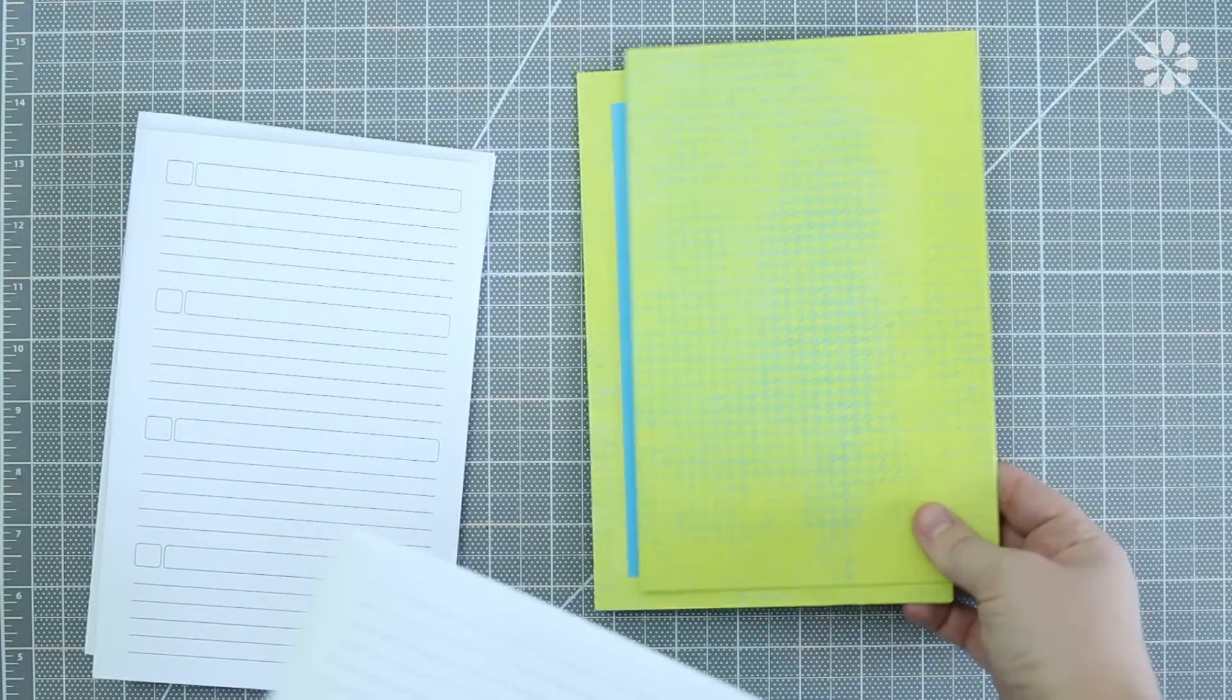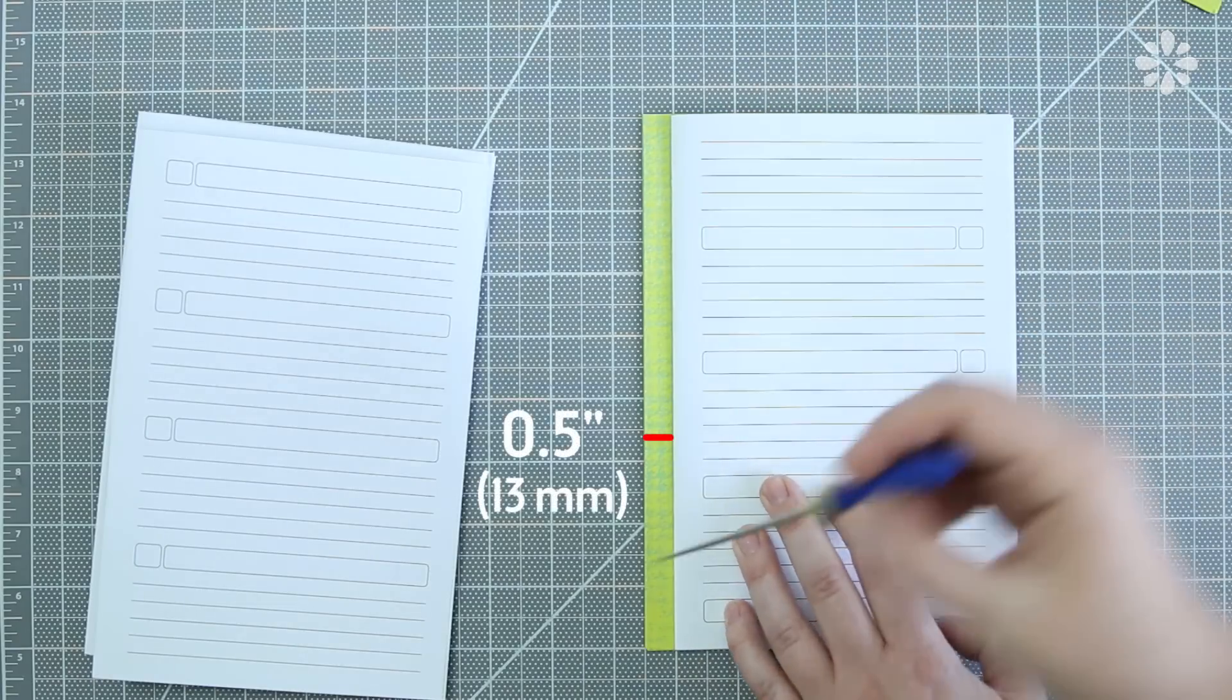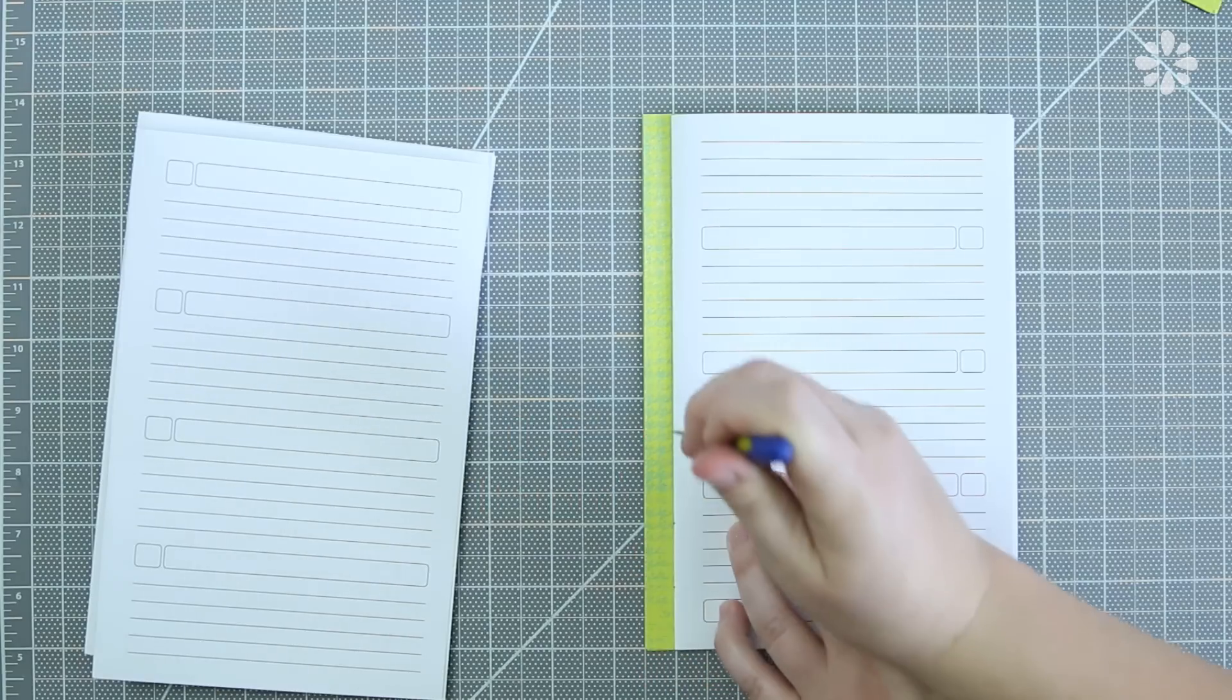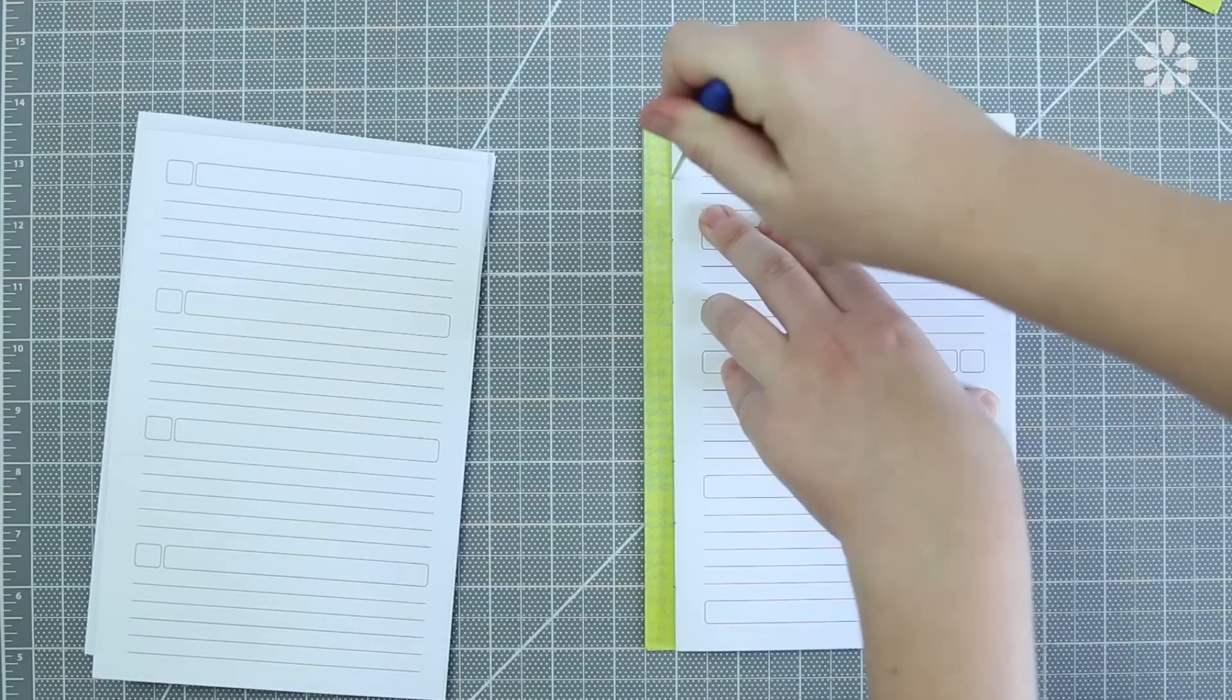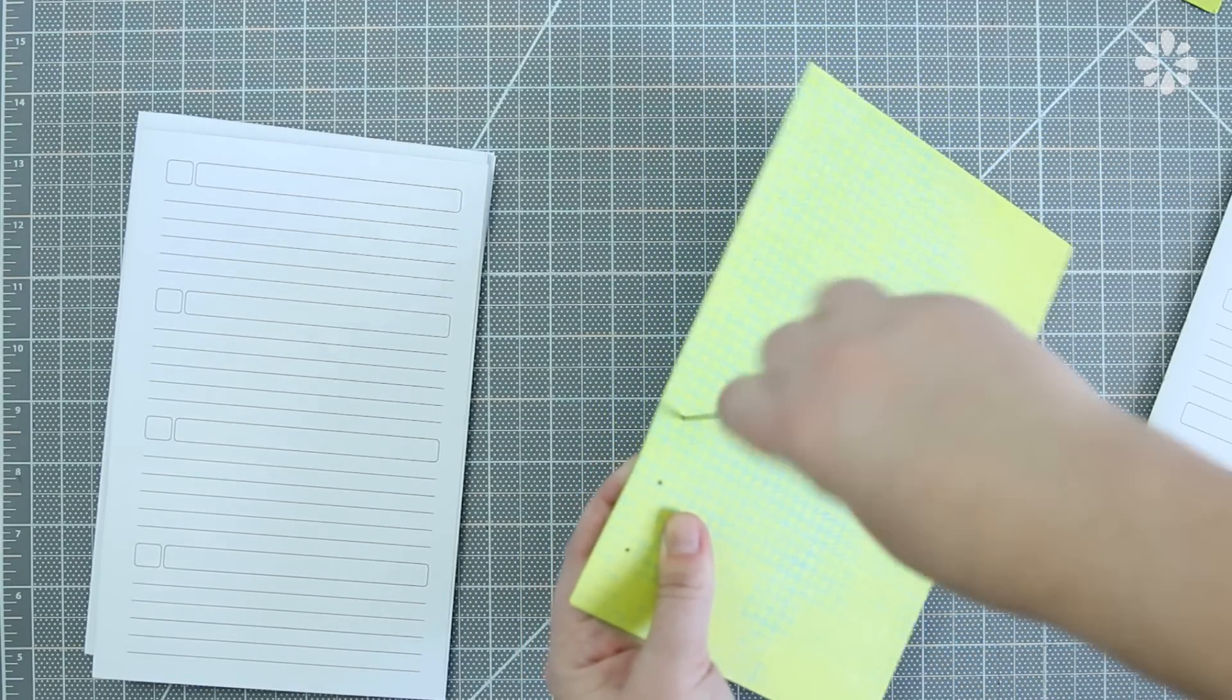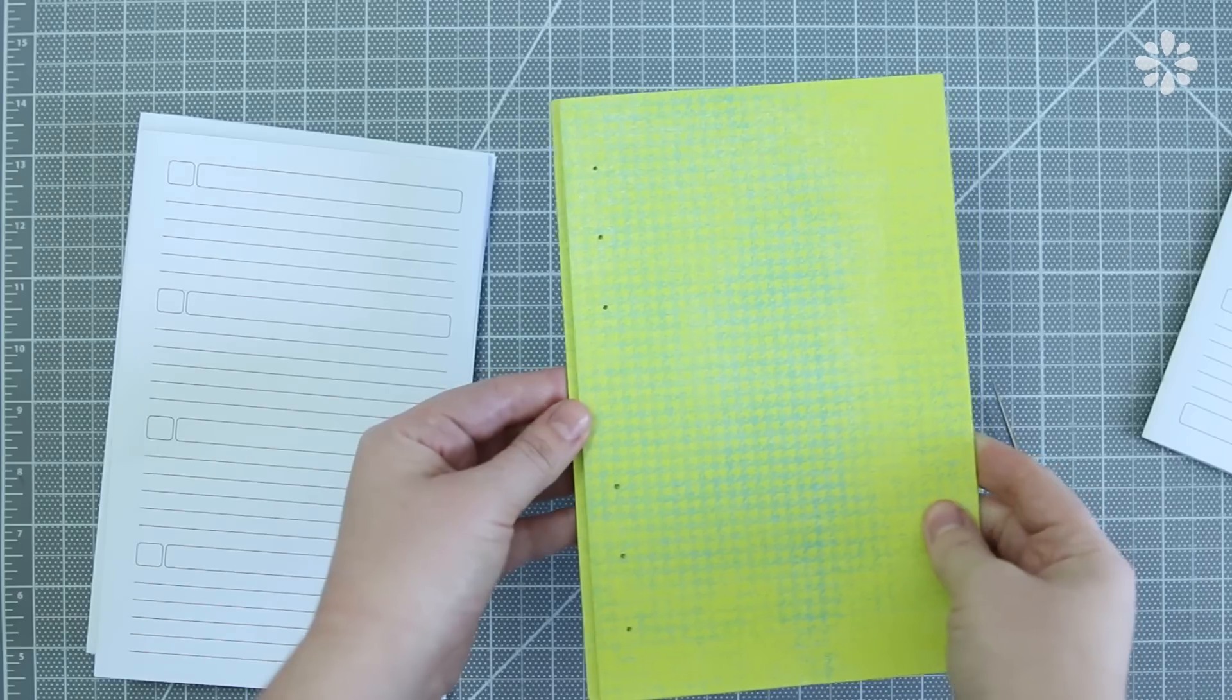Now make binding holes on the covers. Take one signature again, put the signature on top of the cover, leaving about a half inch away from the spine, and use the signature as a template to mark the holes. Then pierce the holes all the way through, so that they're large enough for your binding needle. Then you can use that as a template to mark the holes on your other cover.